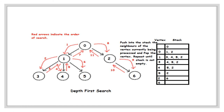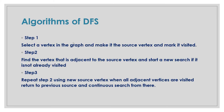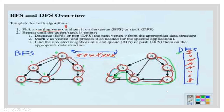So let's discuss about the algorithm. What is the algorithm of DFS? Step 1: Select a vertex in the graph, make it the source vertex, and mark it visited. Step 2: Find the vertex adjacent to the source vertex and start a new search if it is not already visited. Step 3: Repeat step 2 using the new source vertex. When all adjacent vertices are visited, return to the previous source and continue the search from there. This is the algorithm of DFS.